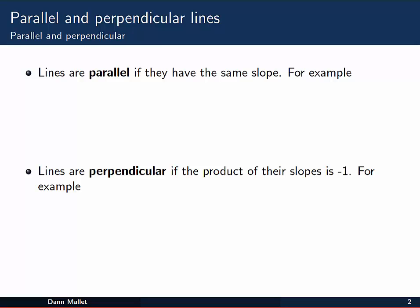Lines are said to be parallel if they have the same slope. In more everyday terms, you might think of parallel lines as being kind of like train tracks. The rails don't really meet each other as you move along the track. They keep the same distance apart.